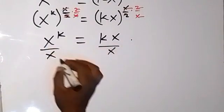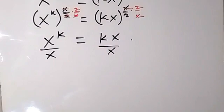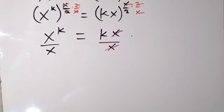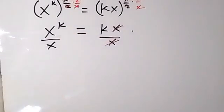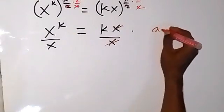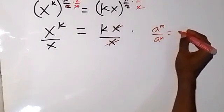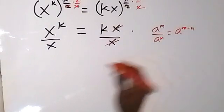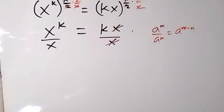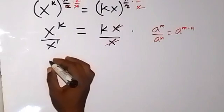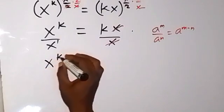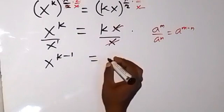Now let's solve here and divide both sides by x. When we divide both sides by x, x cancels on the right side and k is left. On the left side, we can apply the law of indices for division: a raised to power m divided by a raised to power n equals a raised to power m minus n. Here the power of x is 1, so we have x raised to power k minus 1.